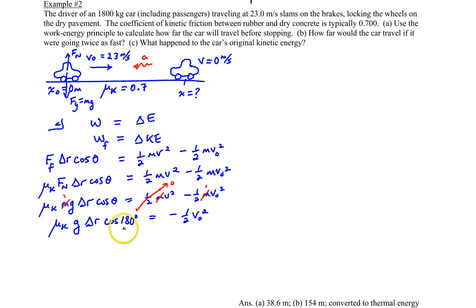And when you do cosine of 180 degrees, you get negative one. So this now becomes negative mu k g delta R equals negative 1/2 v zero squared, so really these two negatives cancel out. And so now our equation for displacement is given by the following: delta R is equal to v zero squared, the initial speed squared, divided by two times the coefficient of kinetic friction times g. So let's go ahead and substitute in there now.